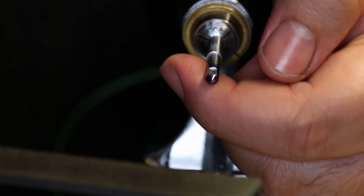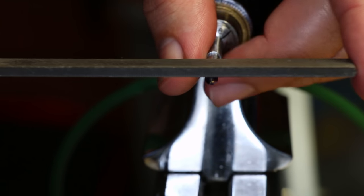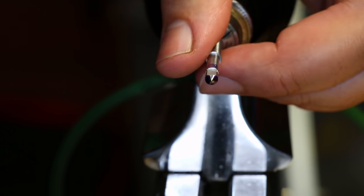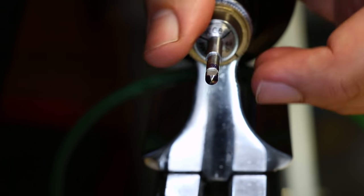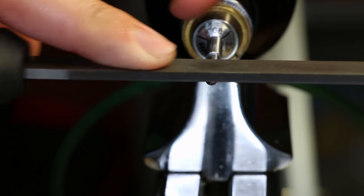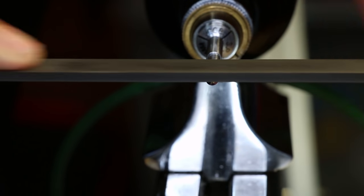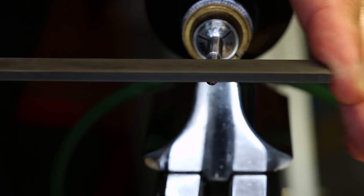When we finish the tool, we want the flat to be aligned perfectly with the center line of the tool. If you remove too much material and end up below the center line, you will find that the tool will dig into the material and chatter. If you don't remove enough material, the tool will not cut and merely rub the surface.